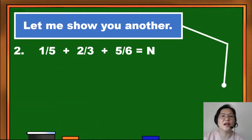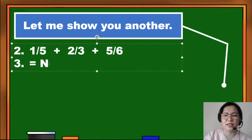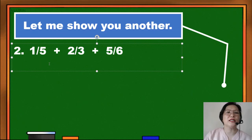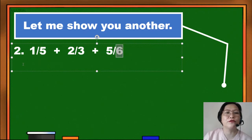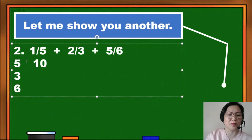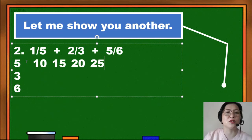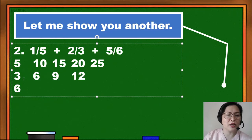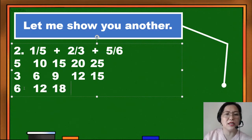Let me show you another. This time it's 1/5 plus 2/3 plus 5/6. Since they are dissimilar fractions, we are going to get the least common denominator by getting the multiples of 5, 3, and 6. Multiples of 5: 5, 10, 15, 20, 25. Multiples of 3: 3, 6, 9, 12, 15. Multiples of 6: 6, 12, 18, 24, 30.